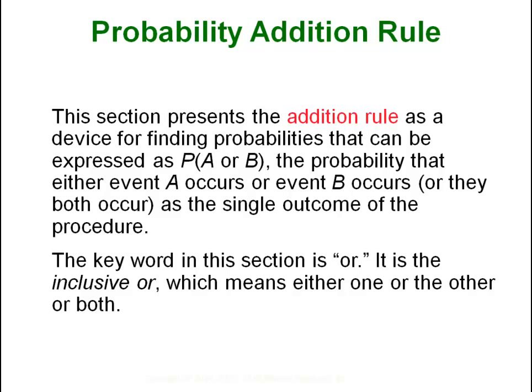Welcome to the probability addition rule. Now that we understand the basics of probability and we know how to count, we have to start figuring out probabilities of basic questions — something of the form: probability of A or B. A simple example would be: pick a card from a deck of cards. What is the probability that it is either a face card or a 7?